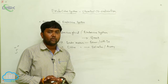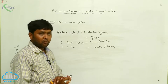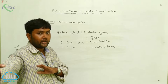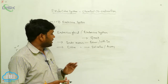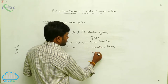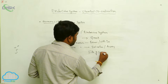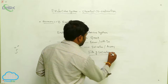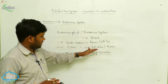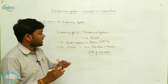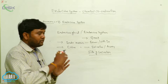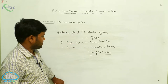The secretions of the hormones from the glands go into the blood, and the secretions are transported to different tissues and organs away from the site of secretion. They are transported away from the site of secretion through the blood to different body parts.